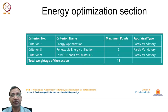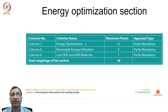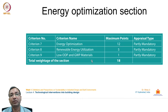The energy optimization section has three criteria: energy optimization (12 points), renewable energy utilization (5 points), and low ODP and GWP materials. With 18 maximum points, this is the top section by weight. Materials with high ozone depleting potential (ODP) and global warming potential (GWP) are discouraged. Renewable energy utilization is strongly promoted with 5 allocated points.